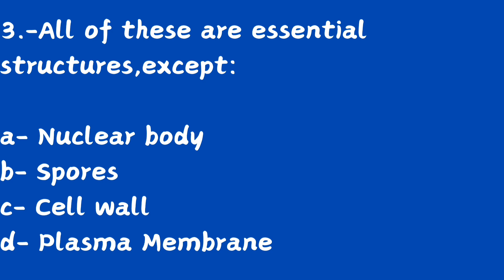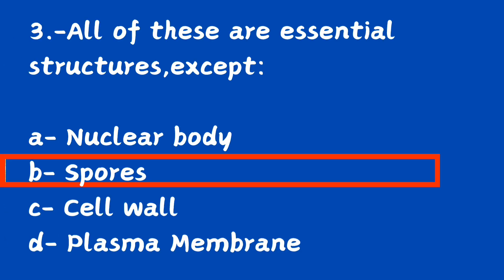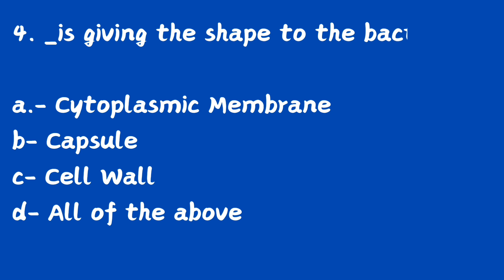Question number 3. All of these are essential structures except: option A, nuclear body; option B, spores; option C, cell wall; option D, plasma membrane. The right answer is option B, spores. Spores are not essential structures but are adaptive structures for bacterial survival.